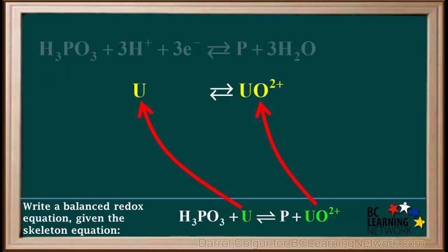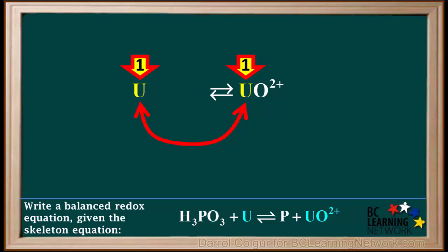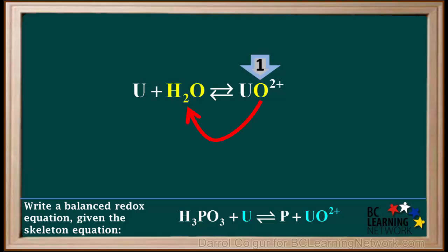Now we'll start the half-reaction in which U produces UO2+. The element other than hydrogen or oxygen is uranium, or U. There is one U atom on both sides, so uranium is already balanced. Next, we'll balance oxygen. We have one O atom on the right side but none on the left, so we'll add one water molecule to the left side. Now we have one O atom on both sides, so oxygen is balanced.